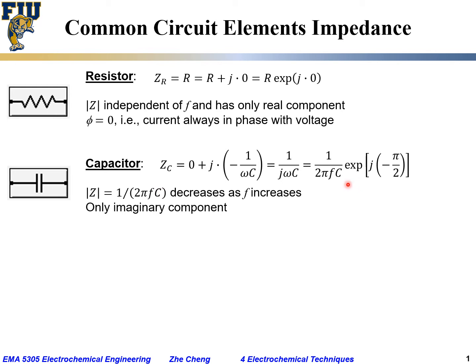And it has only imaginary component - only imaginary, no real component. And the angle of minus pi over 2 means the current is shifted by minus half pi, or minus 90 degrees, with respect to the voltage. The minus sign means the current is ahead of or before the voltage, shifted by 90 degrees.